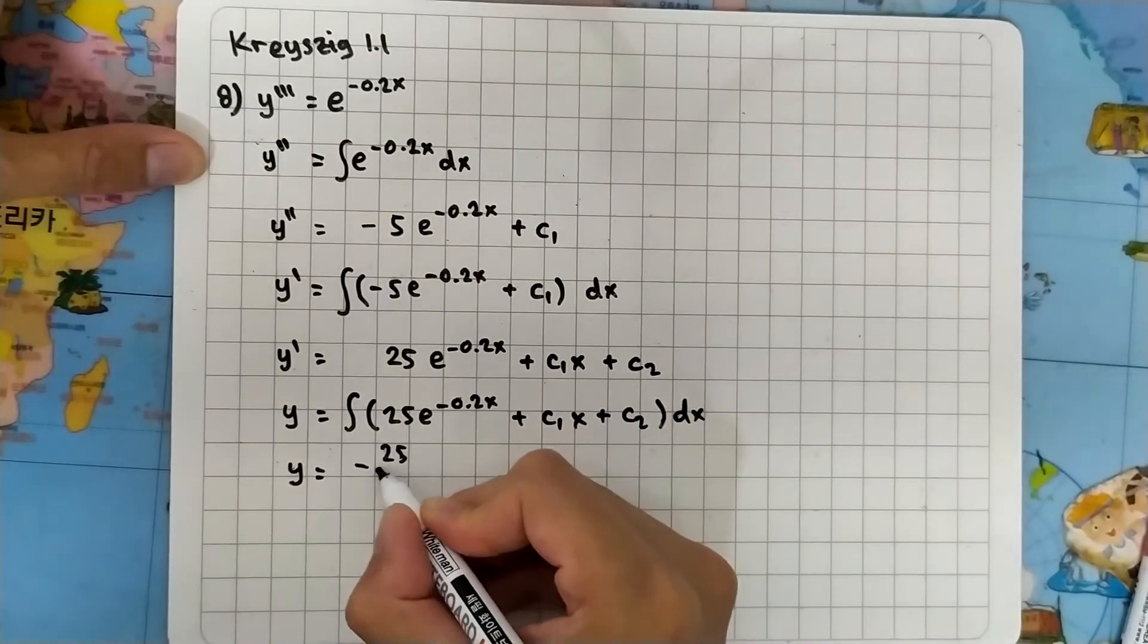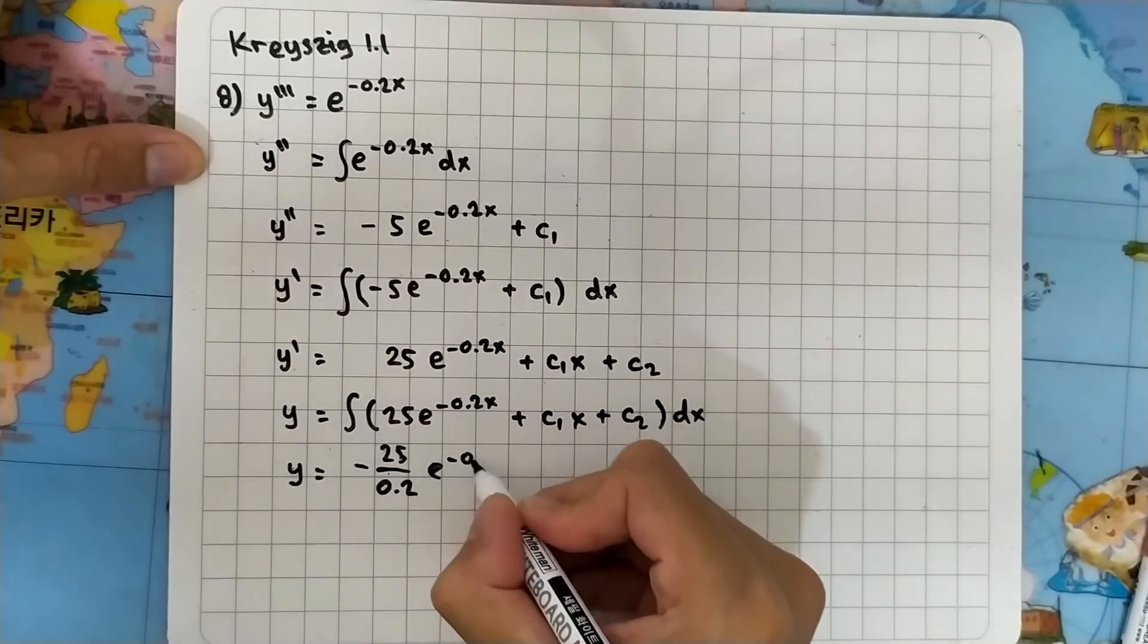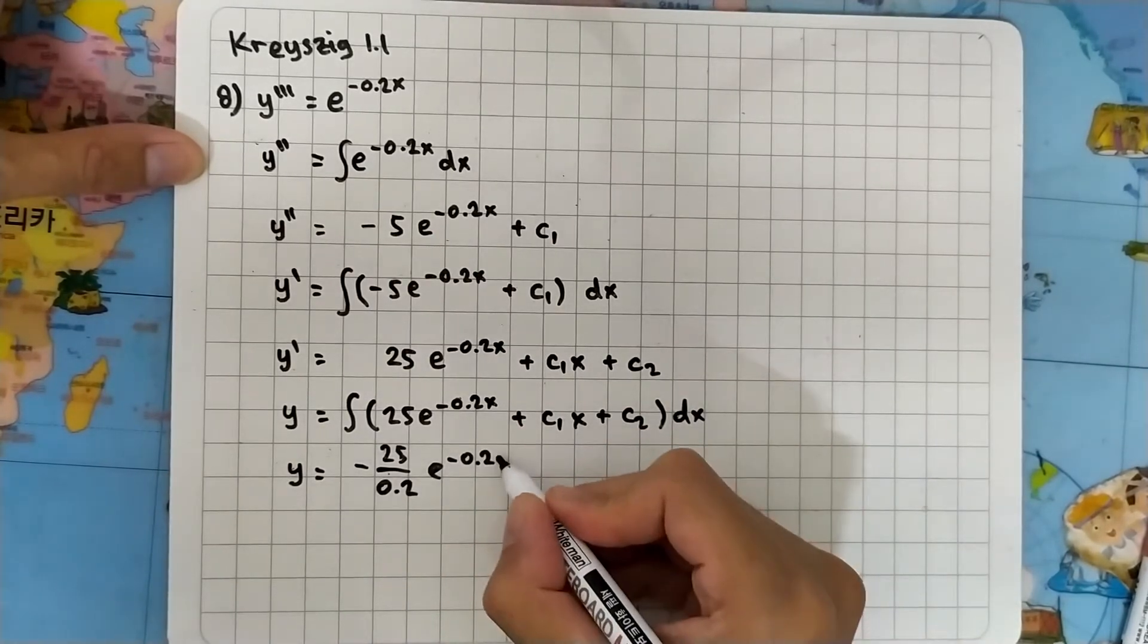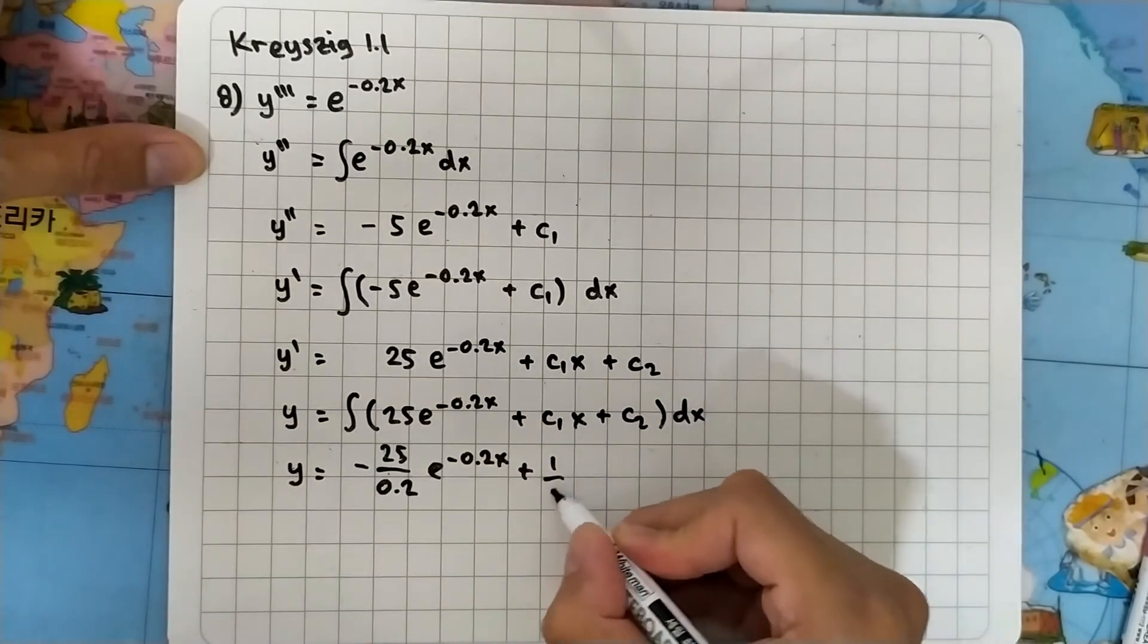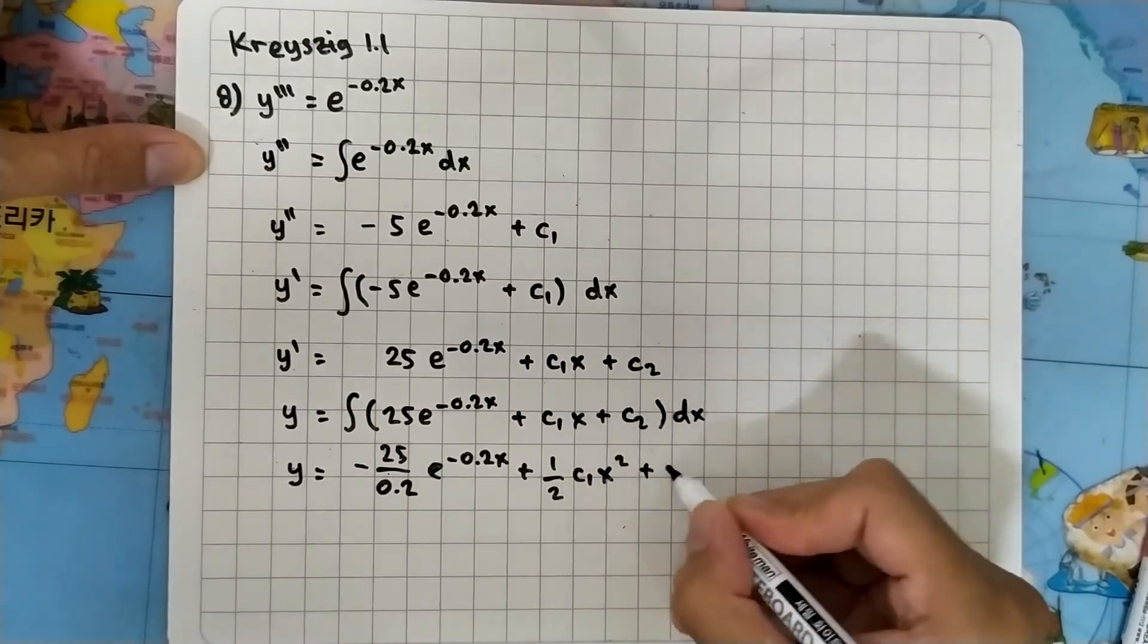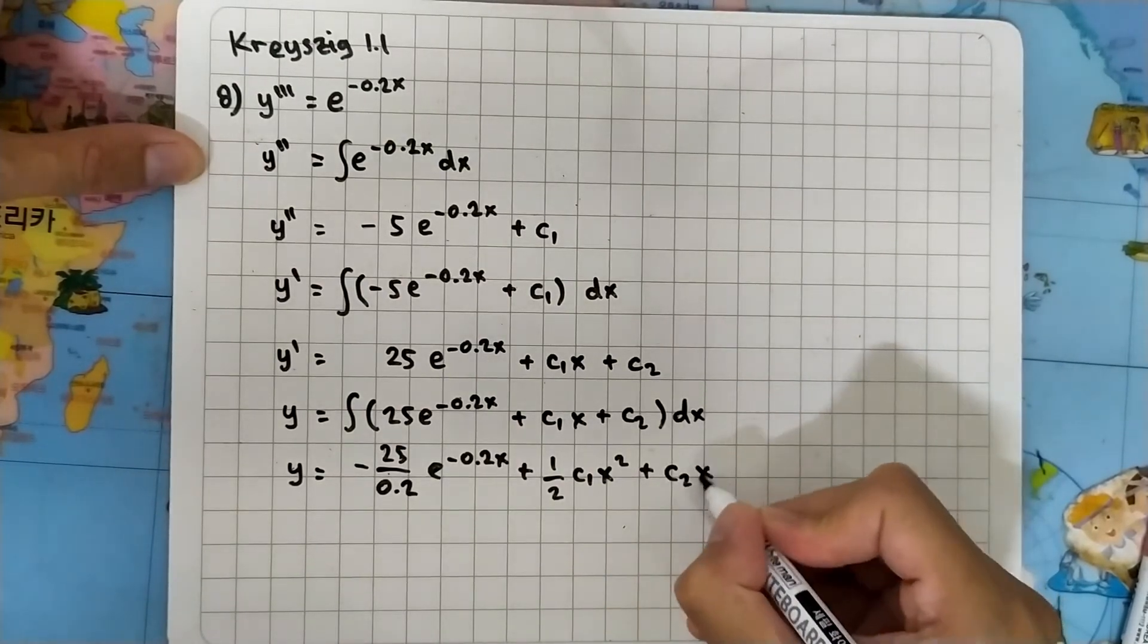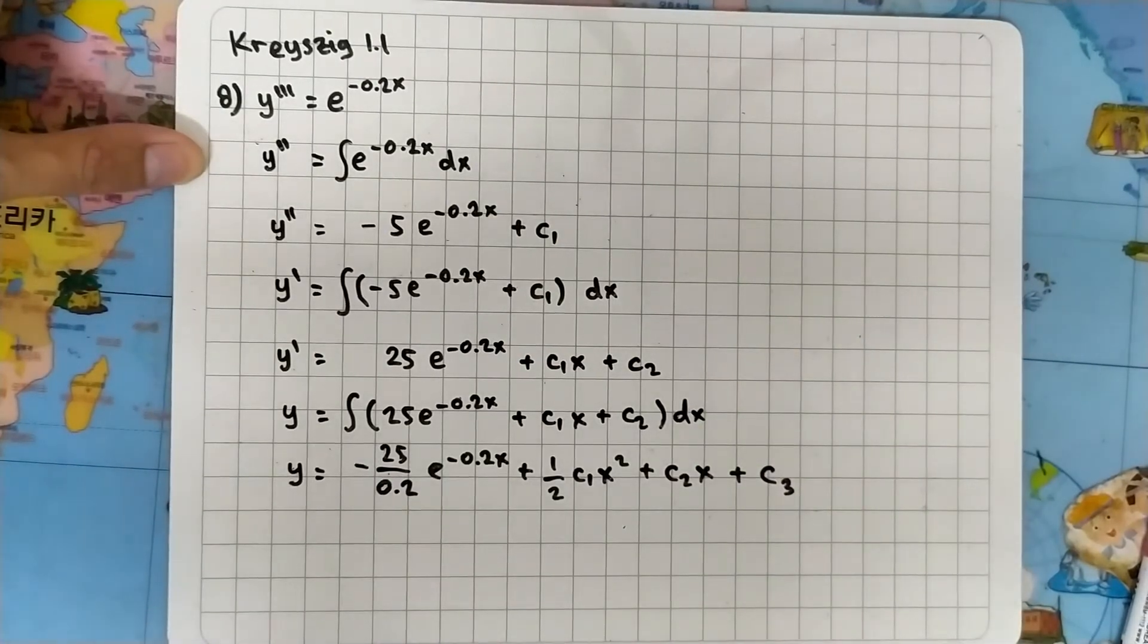Plus this one is half c1 x squared, and this one is c2 x plus c3. So we have minus 25 divided by 0.2 times e to the minus 0.2x plus half c1 x squared plus c2 x plus c3.